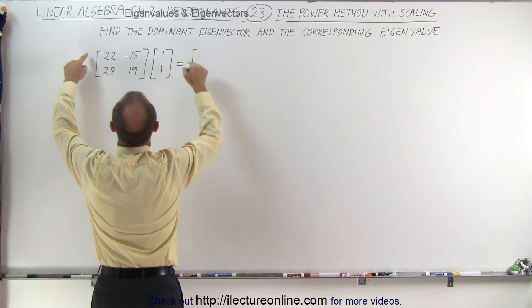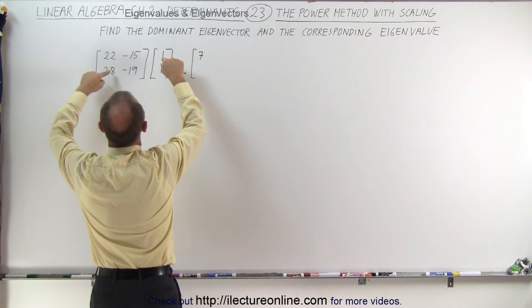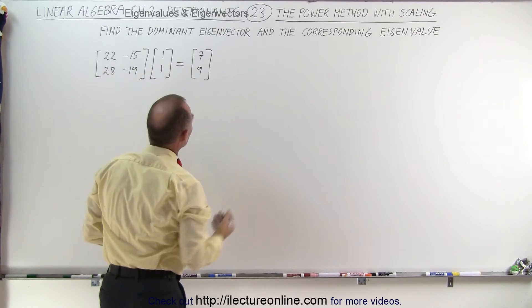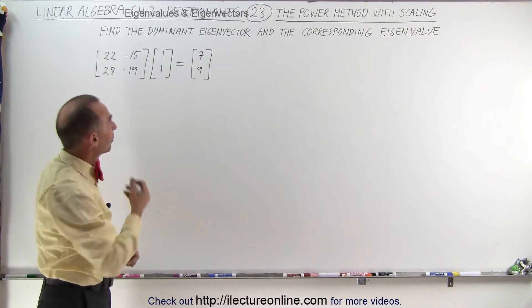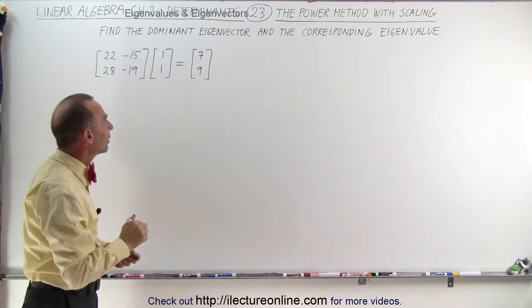So this gives us 22 minus 15 which is 7, 28 minus 19 which is 9. Well there doesn't seem to be much there we can play with. We don't know yet what it's going to converge to but what we're going to do instead is we're going to scale it.